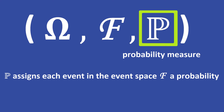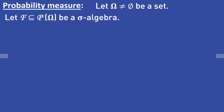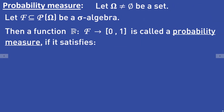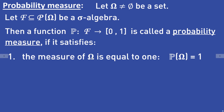Let's take a look at the mathematical definition of a probability measure. Let omega be a non-empty set and let F be a sigma algebra over the set omega. Then a function P from the sigma algebra F to the closed interval is called a probability measure if it satisfies the following two properties. The first property is that the measure of the entire set is equal to one, that means the probability of omega is equal to one.